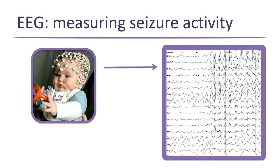Each line on the EEG represents a specific spot in the brain. Sometimes activity is only in one part of the brain, so neurologists can use this to figure out where the seizure is happening if it's not affecting the entire brain.